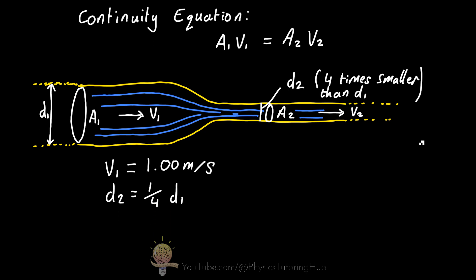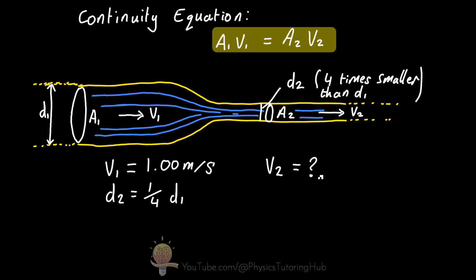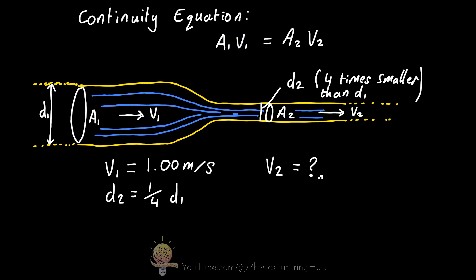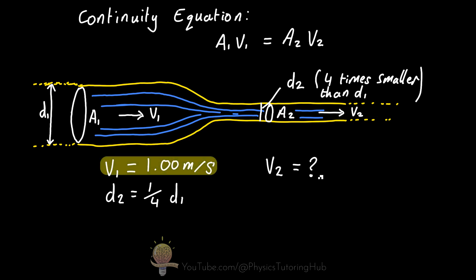To solve questions like these, we need to make use of the continuity equation, where the flow rate of water entering the pipe on the left-hand side is equal to the flow rate of water leaving on the right-hand side. We know the velocity of the fluid entering the pipe: V1 is equal to one meter per second.